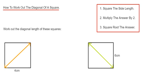Hi guys, welcome back. This is Maths 3000. Now I'm going to show you how to work out the diagonal length of a square given the side length. You can do this in three easy steps.